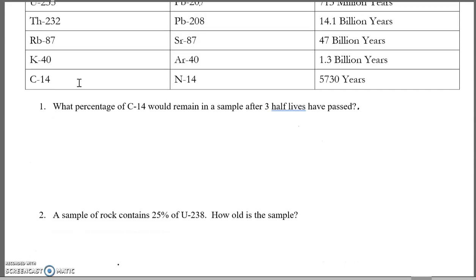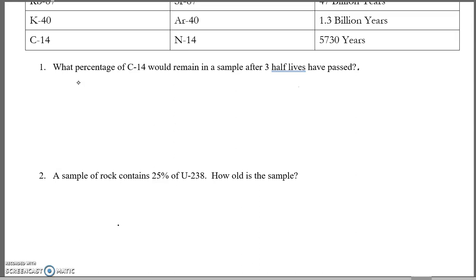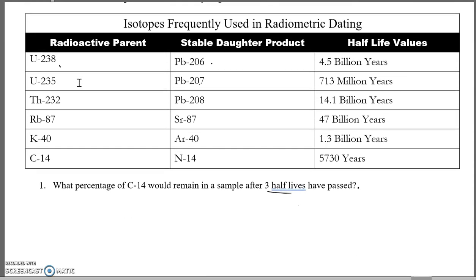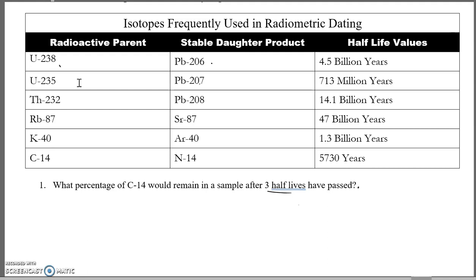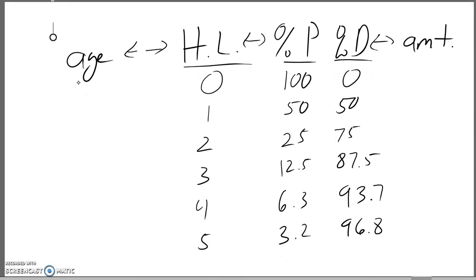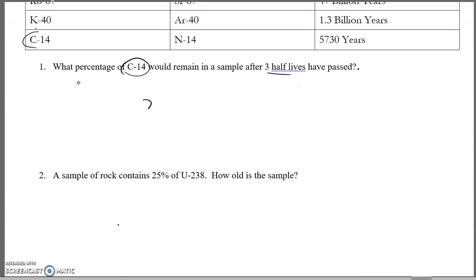Problem one: what percentage of C-14 would remain after three half-lives have passed? The first thing we want to do is identify whether we're dealing with a parent or a daughter. Carbon-14 is listed as a parent. So we come to our chart, find three half-lives, and we can see that the percentage of the parent remaining is 12.5%. After three half-lives, the answer is 12.5%.